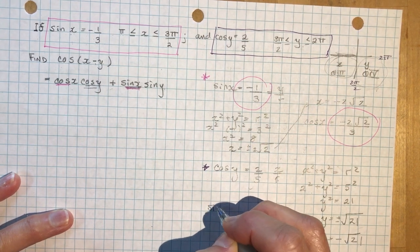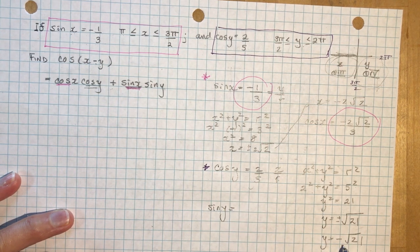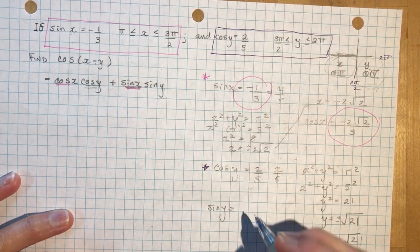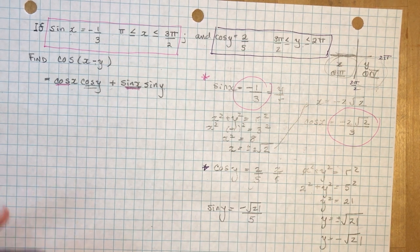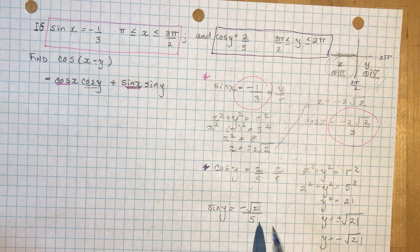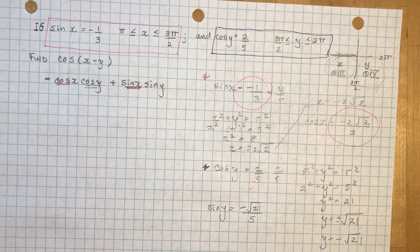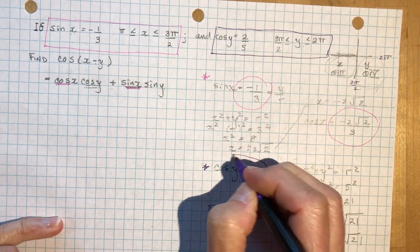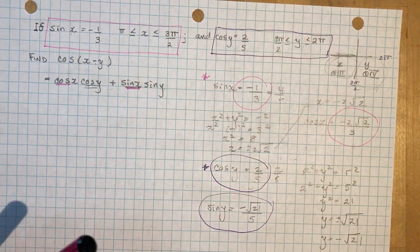And that means that my sine of y is going to be... So don't get mixed up with these variables. That's what got me a little confused for a bit here. So minus root 21 over 5 and 2 over 5. So those are my values for the cos of y and the sine of y. Now the rest of this is easy.